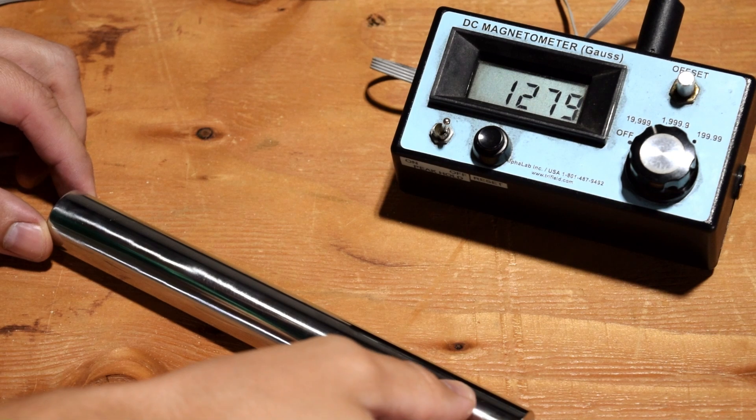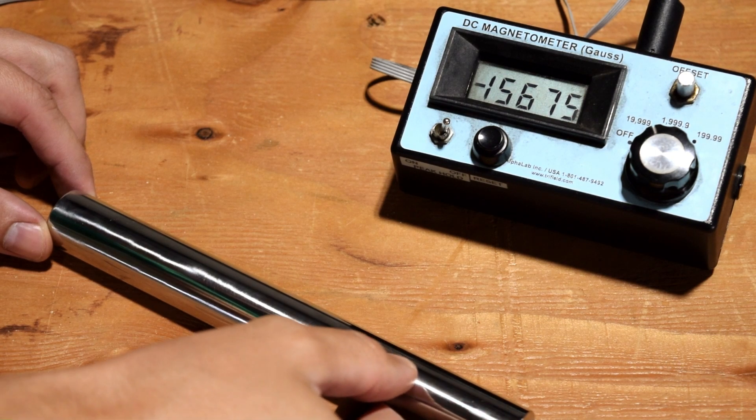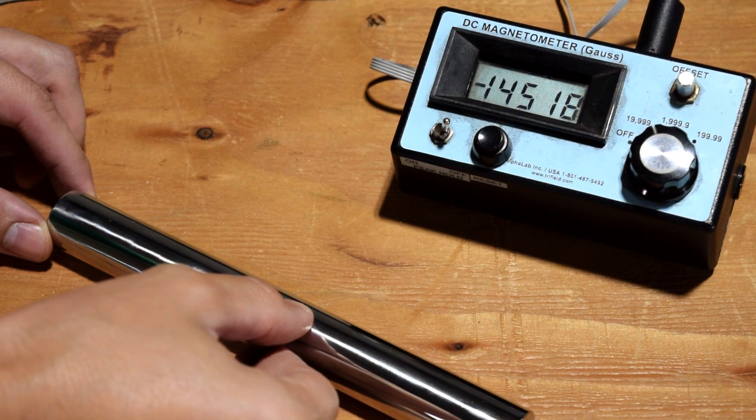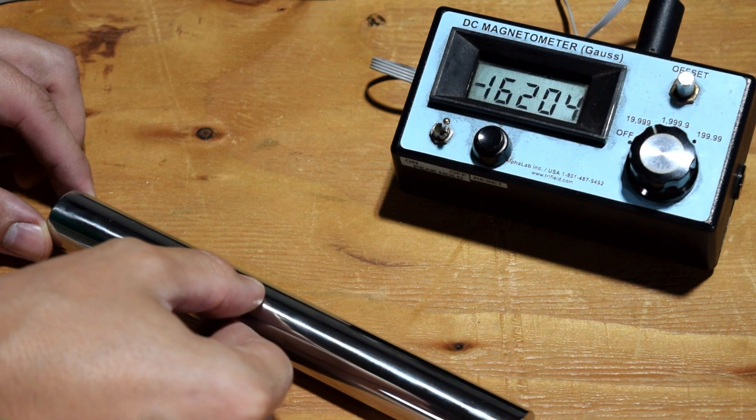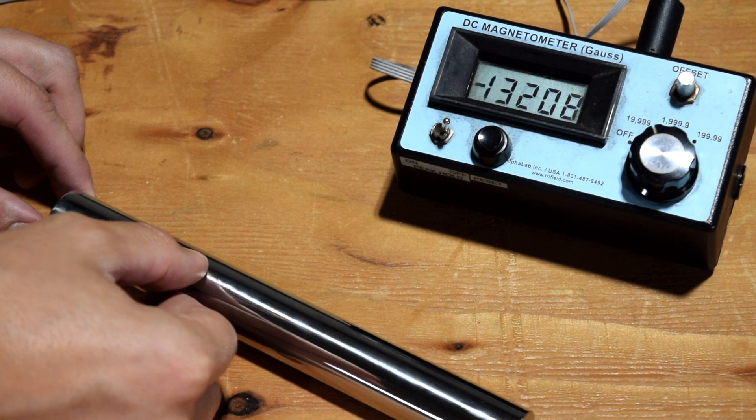Using a gauss meter, we can see just how strong the uniform field is. We spec the rods for 12,000 gauss, but as you can see, the field strength can be much higher.